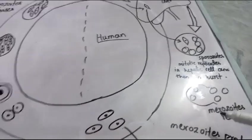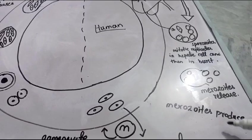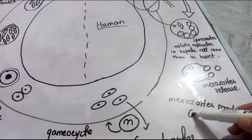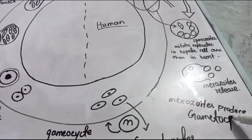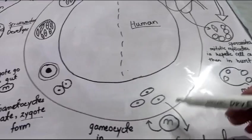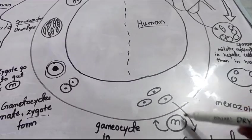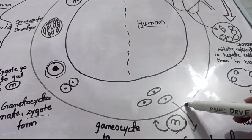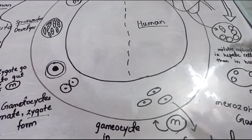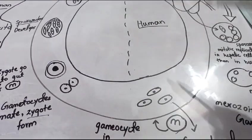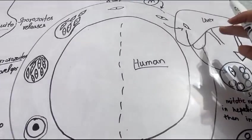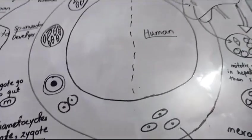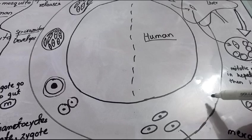At the last step these merozoites will produce gametocytes. Again this gametocyte will be taken up by a healthy mosquito, the person remains infected with malaria, and this life cycle is repeated — the malaria continues to spread. The sporozoite also enters into the red blood cell.